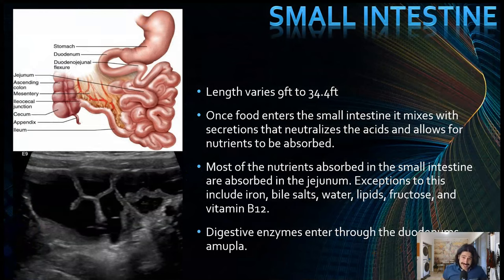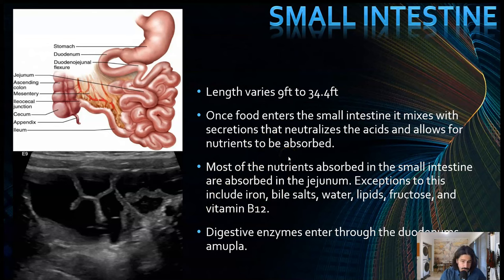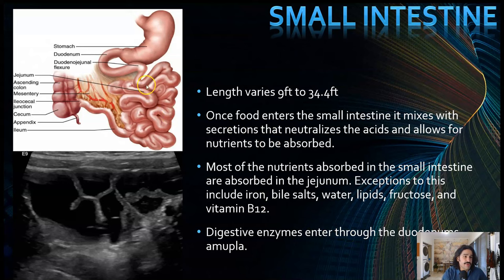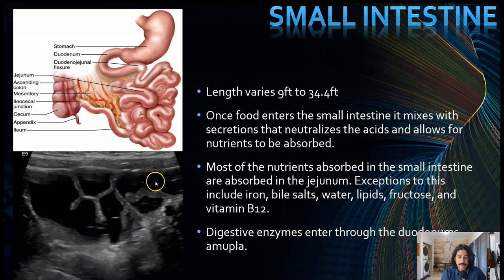The small intestine varies in length from nine feet to 34 feet. Once food enters it and mixes with secretions that neutralize acids, nutrients are absorbed — including vitamins, lipids, glucose, and fructose. Digestive enzymes enter through the duodenum's ampulla of Vater. The common bile duct enters the duodenum, and pancreatic enzymes and bile from the gallbladder go in there to begin digestion of fats and sugars. This is fluid-filled bowel — in real time you'll see a lot of peristalsis. The wall is very thin and you can see the gut signature.